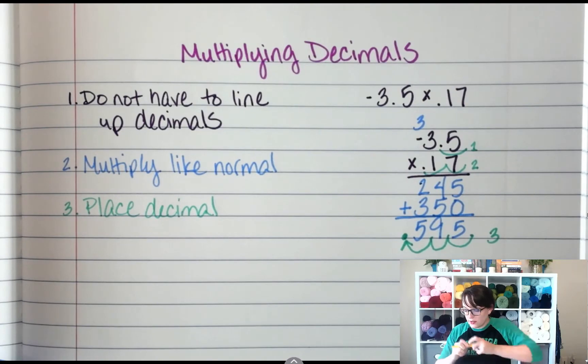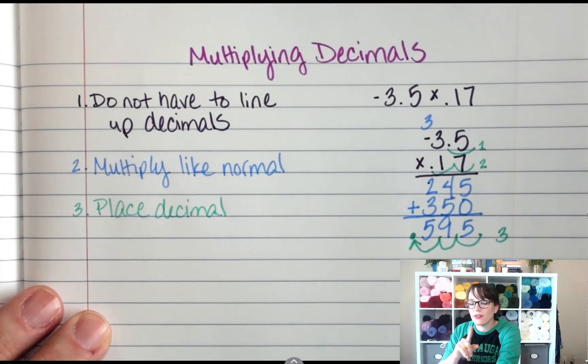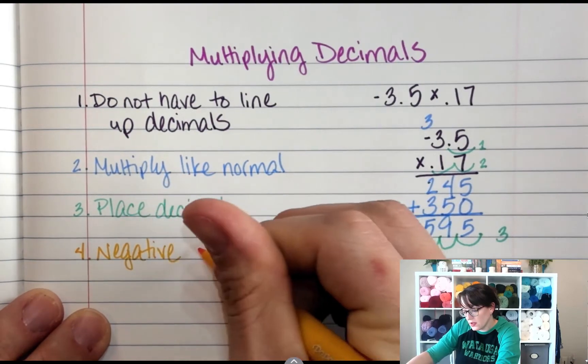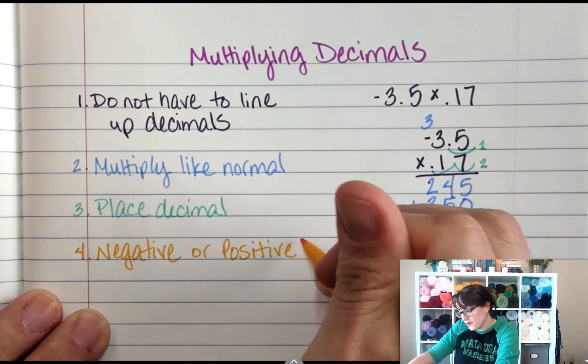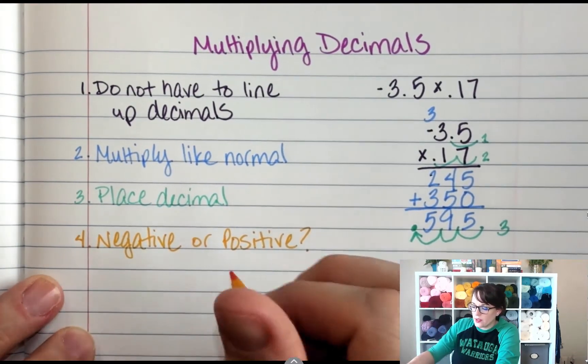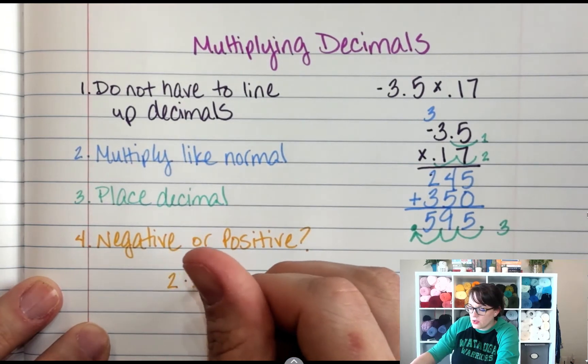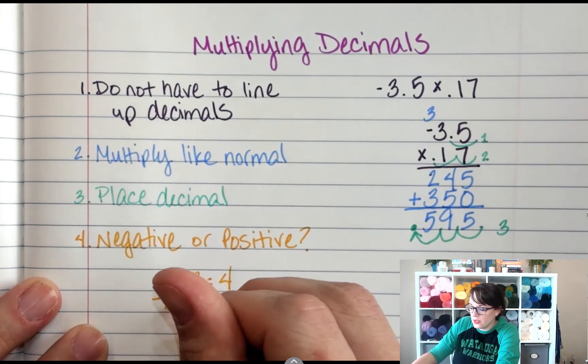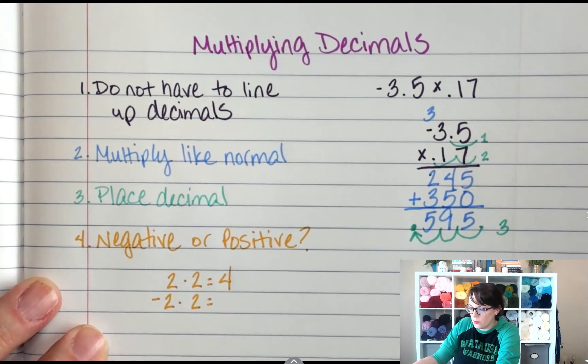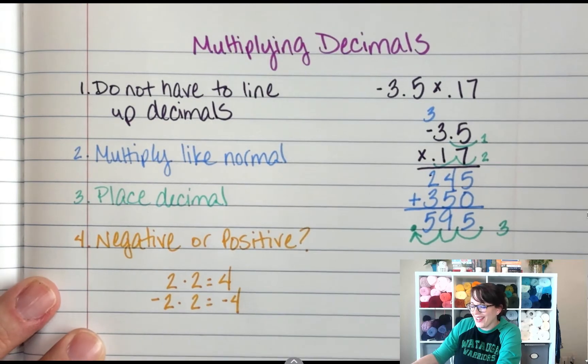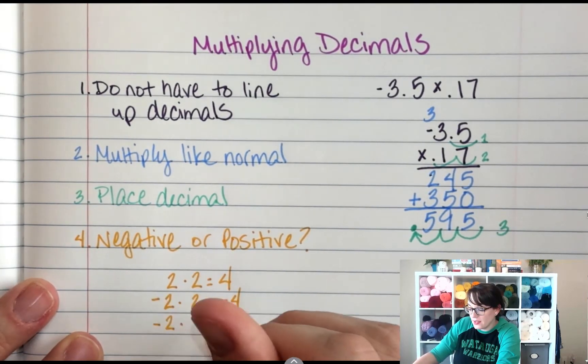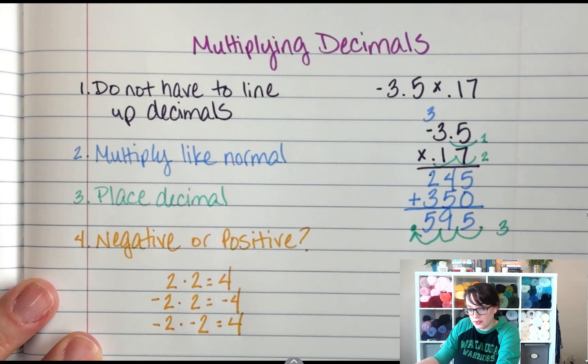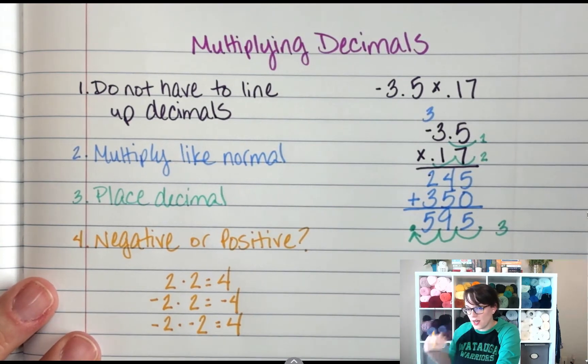And then the absolute last thing that we do, we have to figure out if the answer is negative or positive. Negative or positive. Here's the trick I always use. 2 times 2 is positive 4. So then what's the opposite of 2 times 2? It would be the opposite of 4. And then for this, it would be, okay, so then what's the opposite of the opposite of 2 times 2. So you're going to put a positive 4. So every time you change that sign, the answer has to change with it.